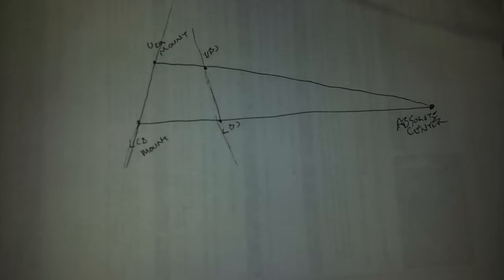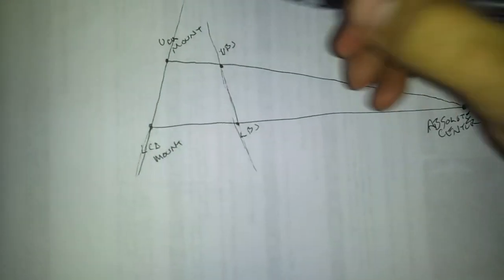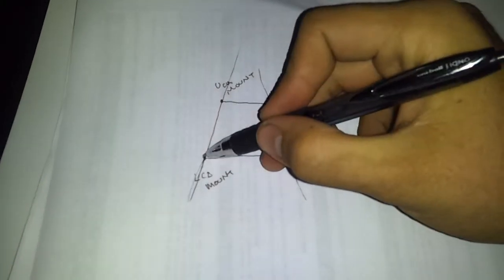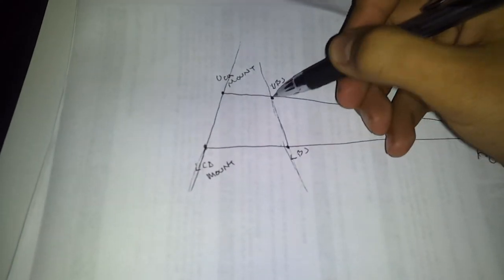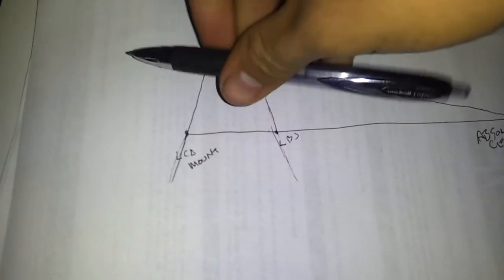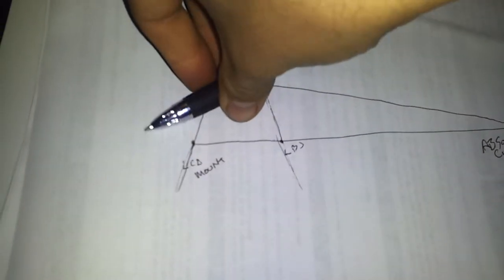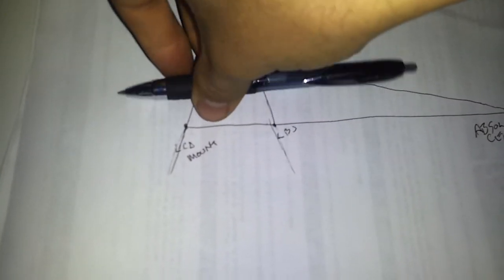Okay. Notice I made a super long line here. This point here is absolute center. Super important. Okay. So upper control arm mount, lower control arm mount, ball joint, upper ball joint. Your suspension is going to be traveling like this. Just to give you representation.